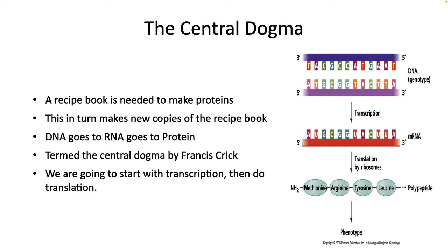Finally, if you are going to make more copies of your life form, you need a way to replicate this DNA. So, you need a recipe book that makes proteins. These proteins carry out all the reactions of the cell, and a subset of these reactions make a copy of the recipe book. Francis Crick proposed that the cell transcribes the DNA into RNA and then translates the RNA into protein. He called this process the central dogma.